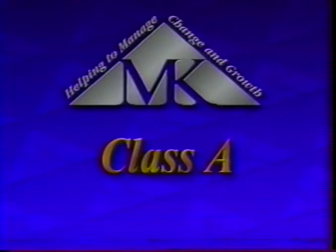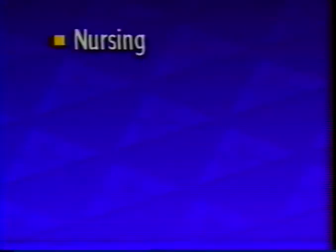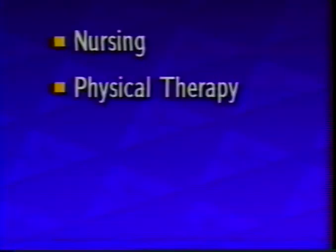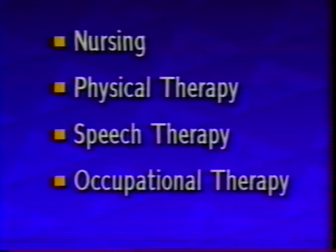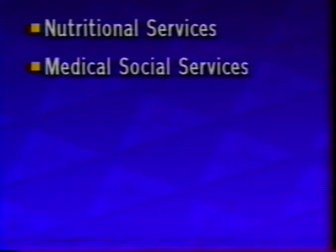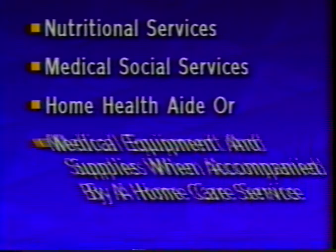Class A is a professional home care agency license. This provider may offer all home care services, at least one of which is nursing, physical therapy, speech therapy, occupational therapy, nutritional services, medical social services, home health aides, or medical equipment and supplies when they are accompanied by a home care service. These services may be provided in a place of residence, including residential care centers.